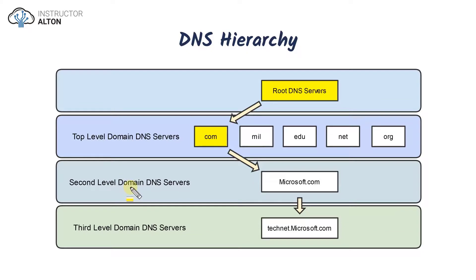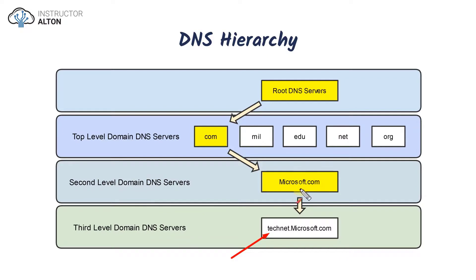Since my website is .com, it gets sent to the .com top-level DNS server, which directs the request to the appropriate second-level domain DNS server. In the example of technet.microsoft.com, the query starts at the top, goes to .com, which redirects to microsoft.com's second-level domain DNS server, and that then sends it down to the technet.microsoft.com DNS server. If there are more subdomains, it can continue going further down.